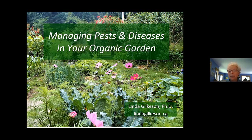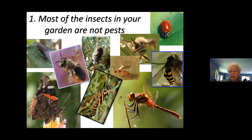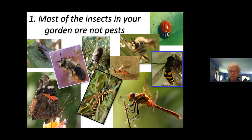The first of four principles to think about — whether it's a yard, landscape, food garden, or anything — is that most of the insects you're going to see in your garden are not pests. In fact, if something is flying around during the day, if it's actually flying in your garden and big enough to see, it is not a pest. None of them are pests except the white cabbage butterfly — the only thing you could see flying during the day that is actually a pest.